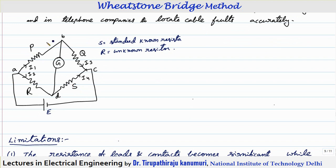In the Wheatstone bridge, current I1 flows in one branch. When I1 reaches the junction, some current goes through the detector or galvanometer and some passes through the remaining branch. Similarly for current I2, it passes through R. Some current may go into the galvanometer or come from the galvanometer, and the resultant — I2 plus or minus the galvanometer current — passes through the standard resistor.